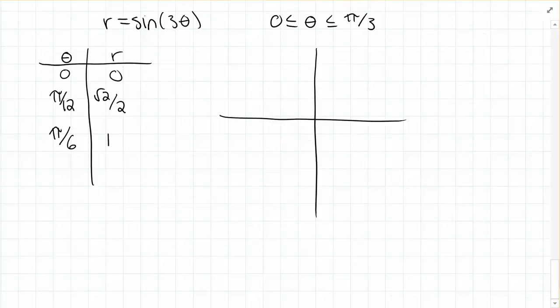Pi over 3, the sine of 3 pi over 3 is sine of pi, which is 0.